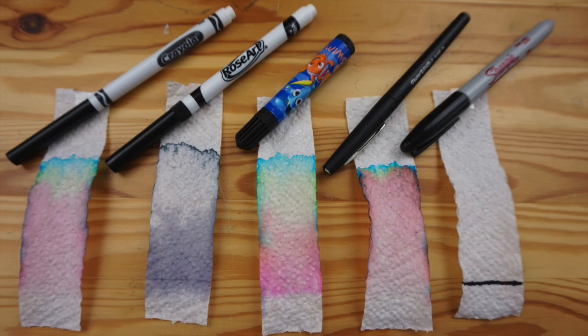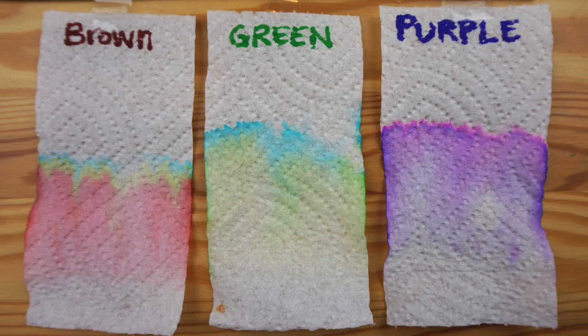And here are several different types of markers on paper towels. Notice how the permanent marker doesn't change at all. You can use colored markers too, but whatever marker or paper you use, be sure that the line of ink stays above the water.